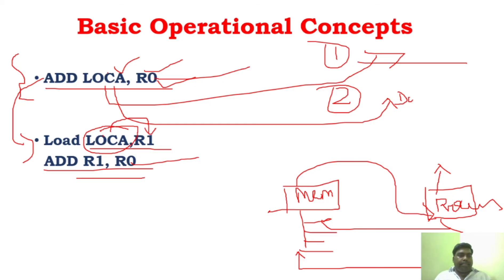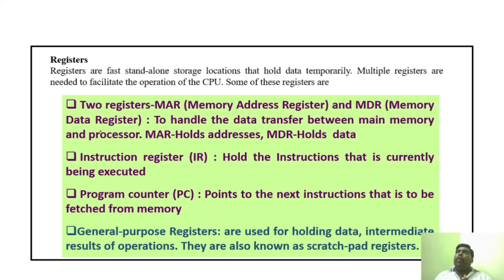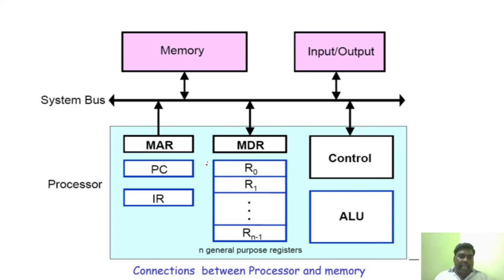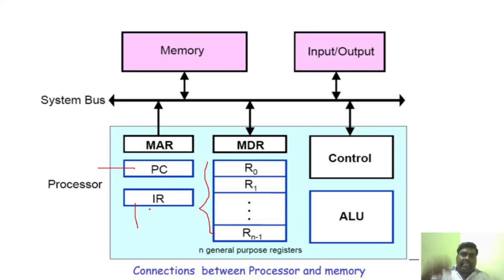To understand this clearly, we need to understand what the different registers involved are. The processor performs all operations and fetches instructions from memory. The processor has many general purpose registers. Very importantly, it has an instruction register (IR), a program counter (PC), a memory address register (MAR), and a memory data register (MDR). Apart from that, it has a control unit and an ALU unit.